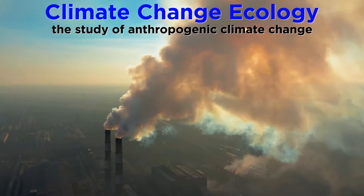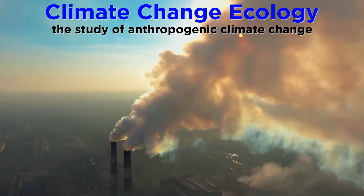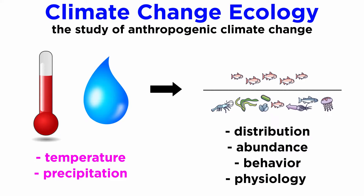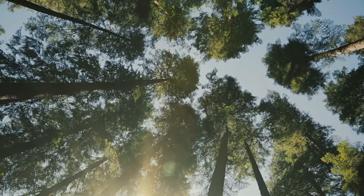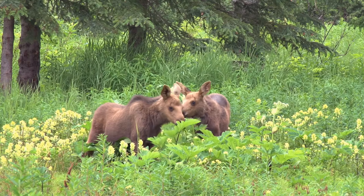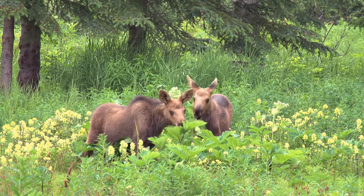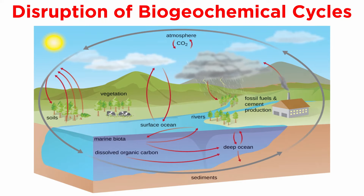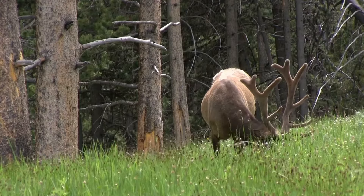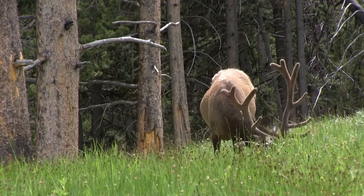Climate change ecology is the study of the effects of anthropogenic, human-caused climate change on any aspect of ecology. This includes the effects of altered temperature and precipitation on the distribution, abundance, behavior, and physiology of populations and communities. In addition to altering plant communities, climate change likely will also disrupt the ecological balance between interdependent and often endangered plant and animal species. Biodiversity will be reduced, and Earth's water, energy, carbon, and other element cycles will be disrupted, leading to vast ecological stress. Climate change is one of the biggest threats that wildlife is facing.